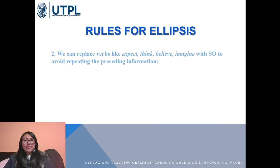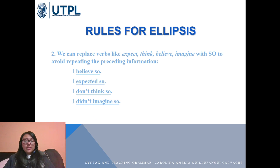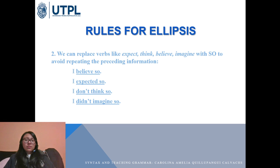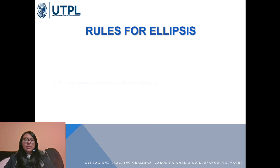Second, we can replace verbs like 'expect,' 'think,' 'believe,' and 'imagine' with 'so' to avoid repeating preceding information — for example, 'I believe so' or 'I expected so.' For negative answers, we use 'I don't think so' or 'I didn't imagine so.' So if someone says 'This is going to be fun playing with our children' and my husband replies 'I believe so,' he is avoiding repeating all that information.